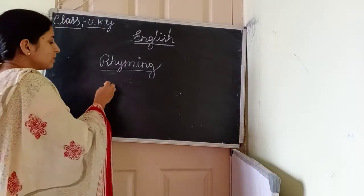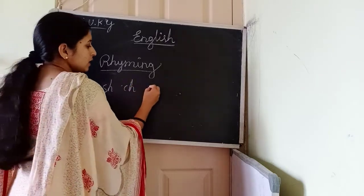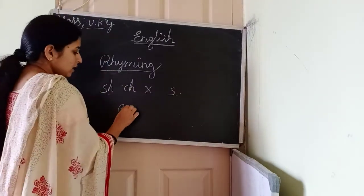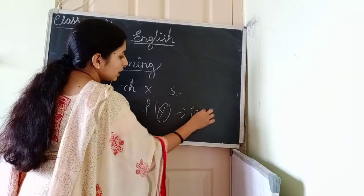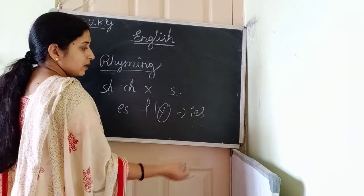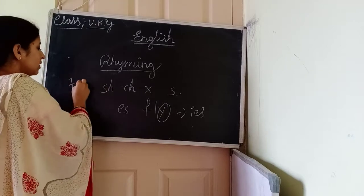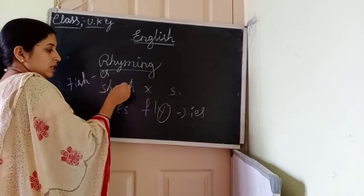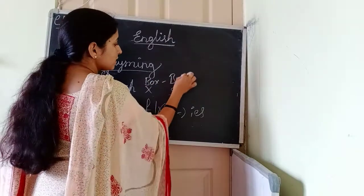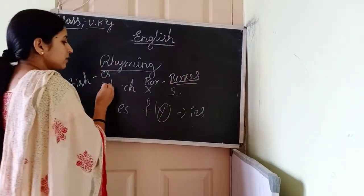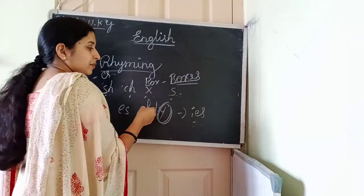For singular and plural: when a word ends with 'sh', 'ch', 'x', we need to add 'es'. When a word ends with 'y', instead of 'y' we add 'ies' — for example, 'fly' becomes 'flies'. For words ending with 'sh', like 'fish', we add 'es' to get 'fishes'. For 'ch', like 'ch'; for 'x', like 'box' — 'box' becomes 'boxes'. For rest of the words, like 'banana', just add 's' to get 'bananas'.